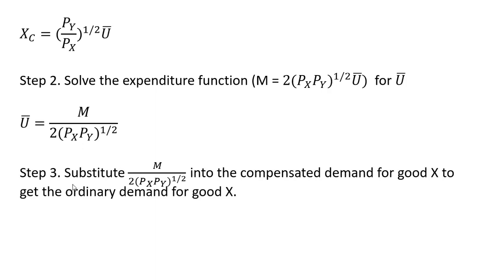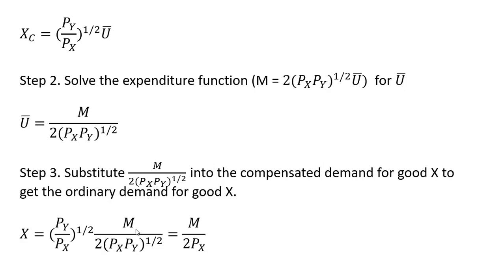Step 3 is where we get the ordinary demand for good x. We're going to substitute our result for ū and plug it into the compensated demand for good x. Once you do that, you have the ordinary demand for good x. So we're taking our compensated demand for good x, and where I have ū, I'm plugging in this result — income divided by the following — making that substitution.